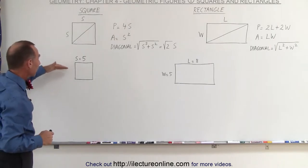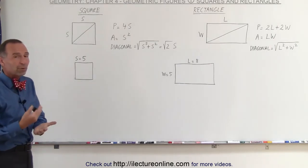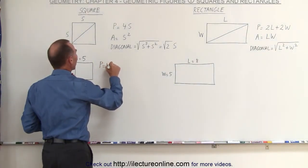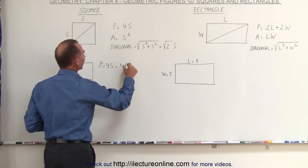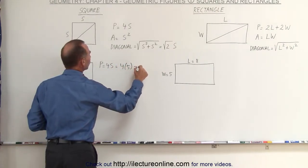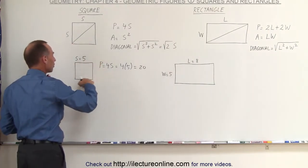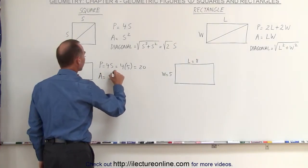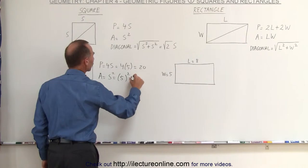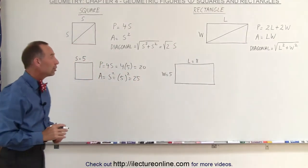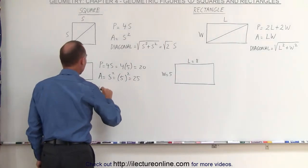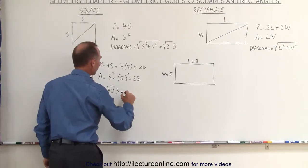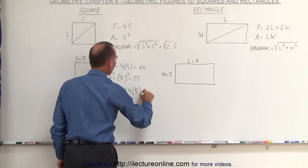Here we have a couple of examples. Let's say we have a square with a side equal to 5. The perimeter is equal to 4 times the side, which is 4 times 5, equal to 20. The area is equal to the side squared — in this case 5 squared, or 25 square units. To find the diagonal, it's equal to the square root of 2 times the side, which is approximately 1.4 times 5, equal to 7.